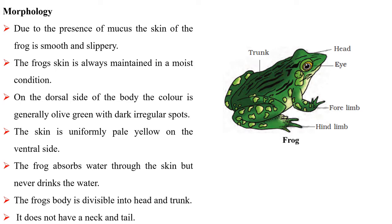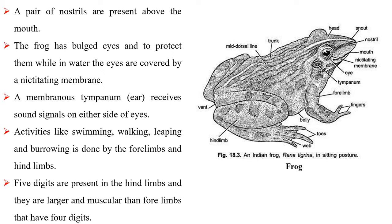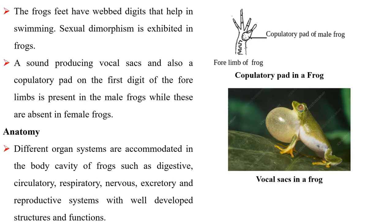A pair of nostrils are present above the mouth. The frog has bulged eyes and to protect them while in water, the eyes are covered by a nictitating membrane. A membranous tympanum receives sound signals on either side of the eyes. Activities like swimming, walking, leaping and burrowing are done by the fore limbs and hind limbs. Five digits are present in the hind limbs and they are larger and muscular than fore limbs that have four digits. The frog's feet have webbed digits that help in swimming.